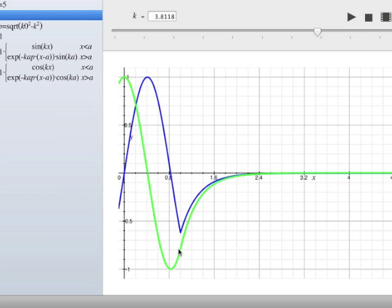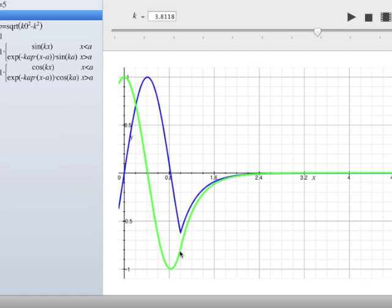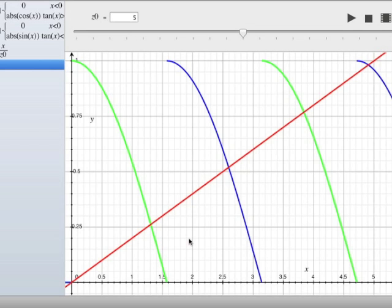So each solution to this transcendental equation corresponds to a k value where the continuity equation and the slope condition, the derivative of the wave function, are continuous at the well boundary. And notice that each one corresponds only to a solution for a particular symmetry, even, odd, even.